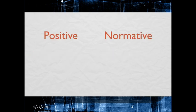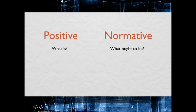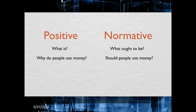All economic questions fall into one of two categories: positive and normative. Positive economics describes what is, and normative economics argues for what ought to be. For example, 'Why do people use money?' is a positive question, while 'Should people use money?' is a normative question. A general rule of thumb: if your economic model has no value judgments, it's positive economics; if it does have value judgments, it's normative economics — since to tell someone what they ought to do, you first have to judge what is best for them.